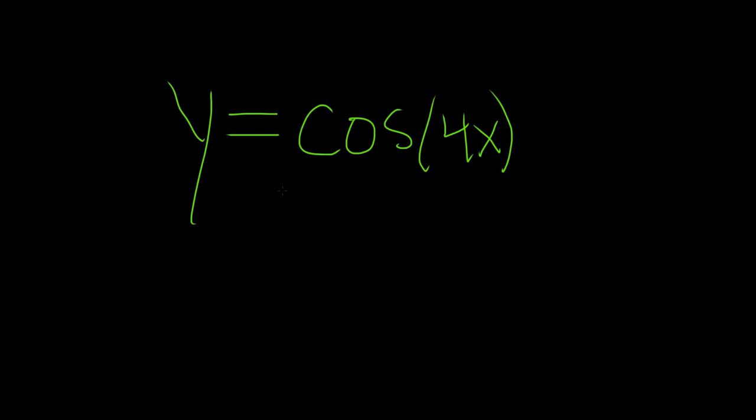So the derivative of cosine is just negative sine, but here it's cosine of 4x. So when we take the derivative, we have to use the chain rule.